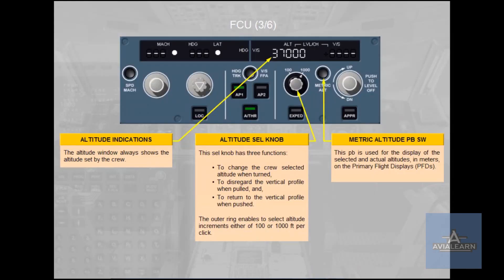The Altitude Indications — the Altitude Window always shows the altitude set by the crew. The Altitude Selector Knob has three functions. First, to change the crew selected altitude when turned. Second, to disregard the vertical profile when pulled. Third, to return to the vertical profile when pushed. The outer ring enables selection of altitude increments of either 100 or 1000 feet per click.